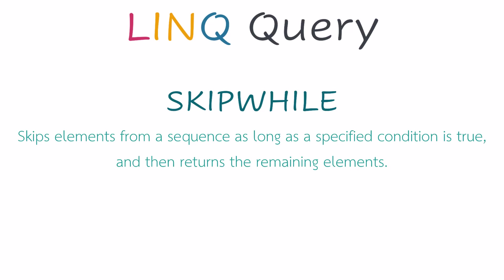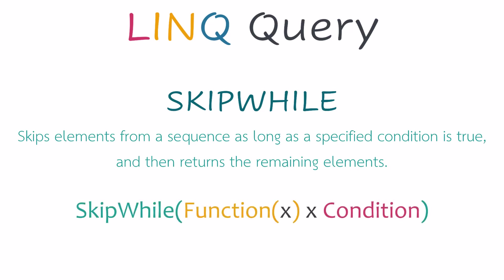The structure of this function is as follows: I write SkipWhile, and then in brackets I first set a function name — for example, x. After that I set a condition using that function name. Let's see the following example to understand it better.